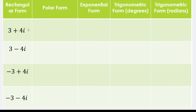Here are examples of the rectangular form. We have 3 as the real part and 4 as the imaginary part; 3 as real part and negative 4 as imaginary part; negative 3 as real part and negative 4 as imaginary part.